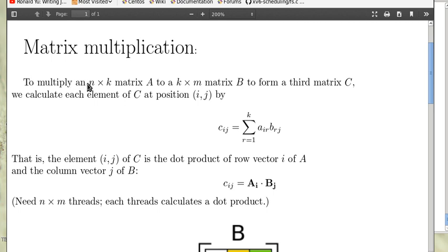To multiply an n by k matrix A to a k by m matrix B to form a third matrix C, we calculate each element of C at position (i,j) by this formula. C_ij, which is the (i,j) element of C, is given by sum from r equals 1 to k of A_ir times B_rj. A_ir is the (i,r)th element of A and B_rj is the (r,j) element of B.